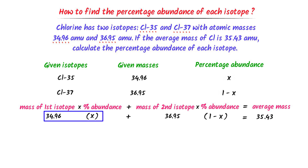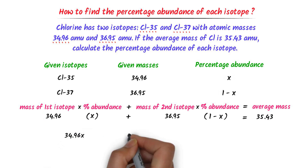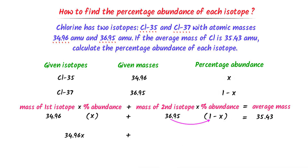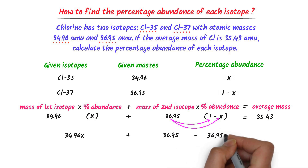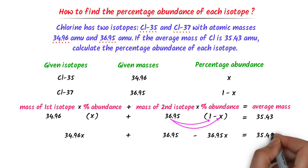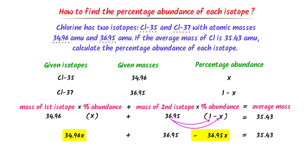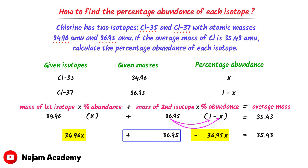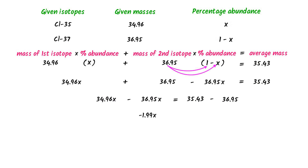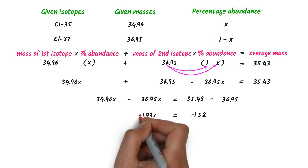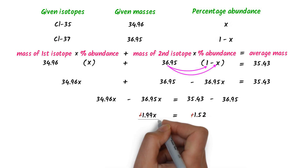Expanding: 34.96X plus 36.95 minus 36.95X equals 35.43 amu. On the left-hand side, I keep the variables in X and shift 36.95 amu to the right-hand side. I get 34.96X minus 36.95X equals 35.43 minus 36.95. After calculation, I get minus 1.99X equals minus 1.52. The minus signs cancel out, and I divide both sides by 1.99.